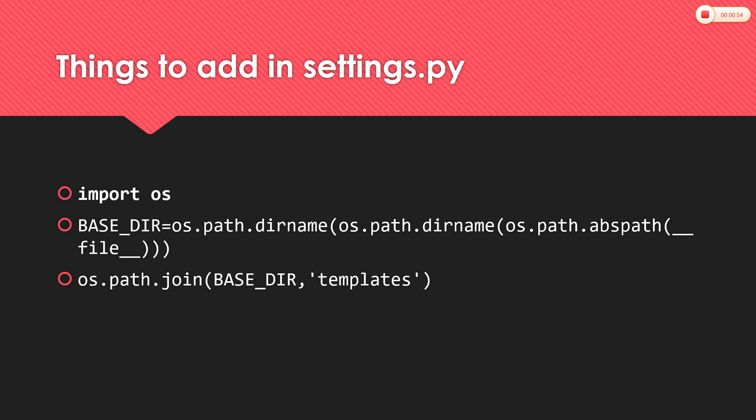Now what are the things to be added in settings.py file? We are going to import the OS package, and we are going to add the BASE_DIR, and we are going to add the BASE_DIR to the templates folder so that os.path.join will combine both our BASE_DIR and templates.